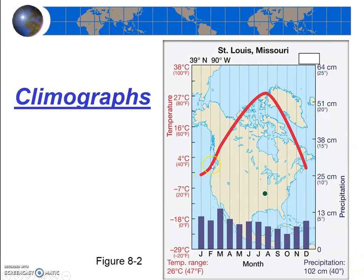Let's look at the temperature profile on this climograph. This station is in the northern hemisphere, and we can see that from the latitude. But even if they didn't tell us that, you should be able to figure it out simply by looking at the temperature profile. The middle six months are much warmer than the outer six months, so we know this is a northern hemisphere station.